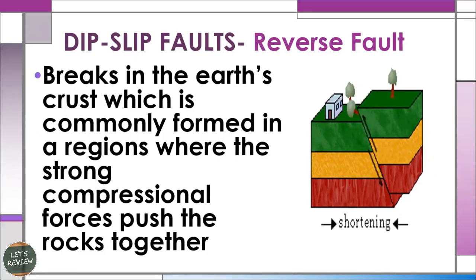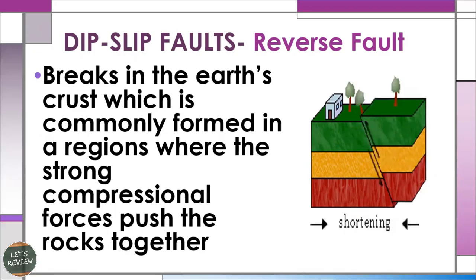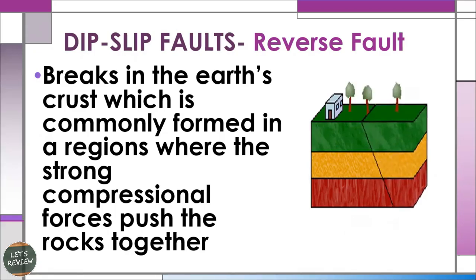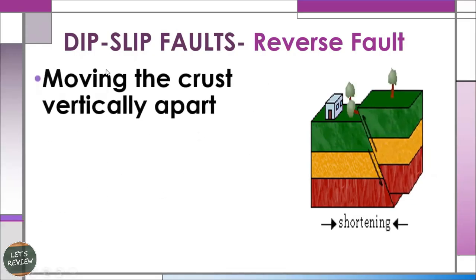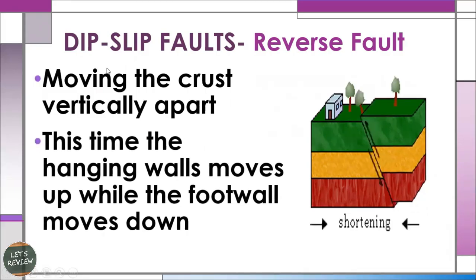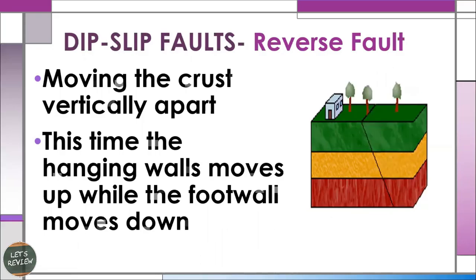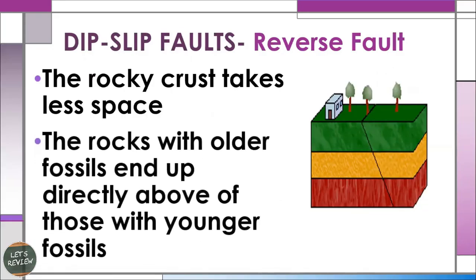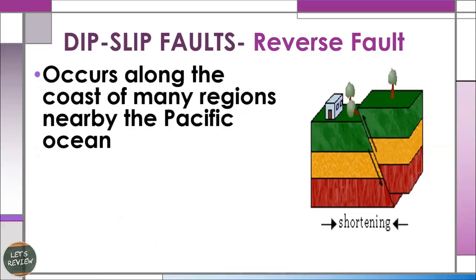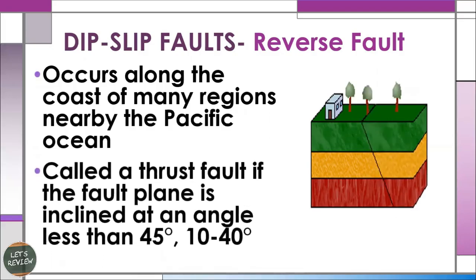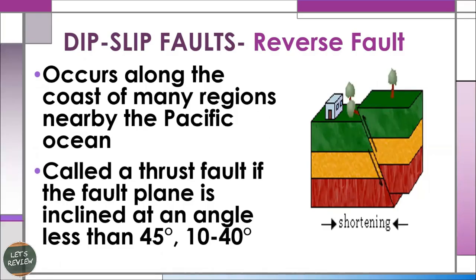Another type is the reverse fault, which is also under the dip-slip category. This is a break in the earth's crust commonly formed in a region where strong compressional forces push the rocks together. In this case, the hanging wall moves up while the foot wall moves down, taking less space. Rocks with older fossils end up directly above those with younger fossils. It occurs along the coasts of many regions near the Pacific Ocean, and is also known as a thrust fault if the fault plane is inclined at an angle of 10 to 45 degrees.